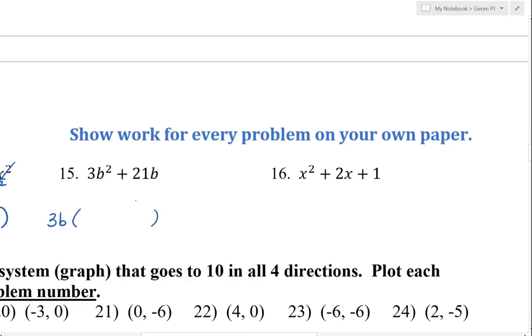Here, we can take out a 3b. That cancels, you're left with b, left with 7.